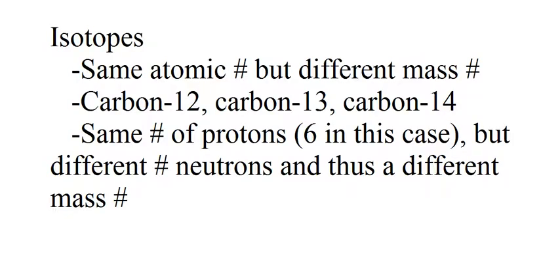What is an isotope? An isotope is actually the exact same element, but it has a different mass number. So what that means is that the atomic number is the same, but the mass number is different.